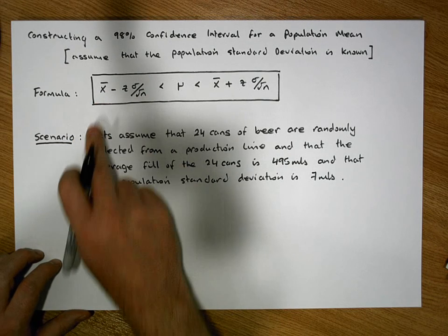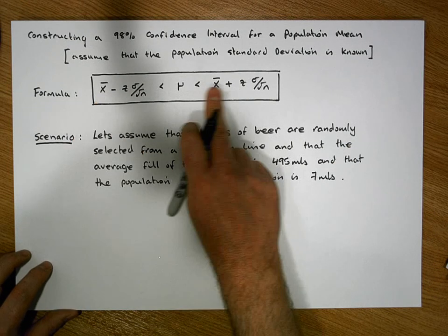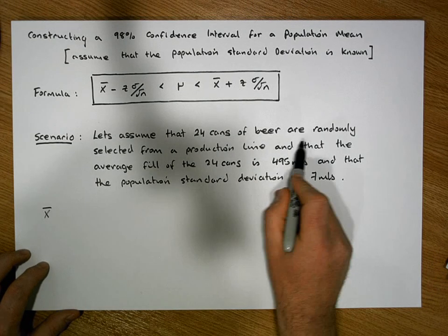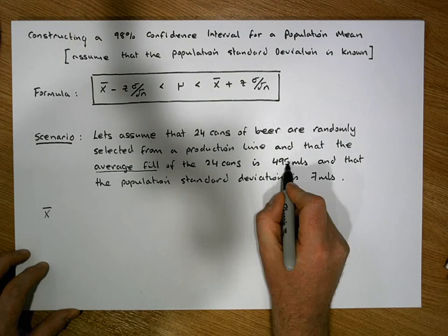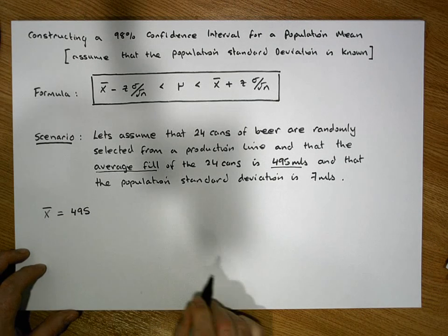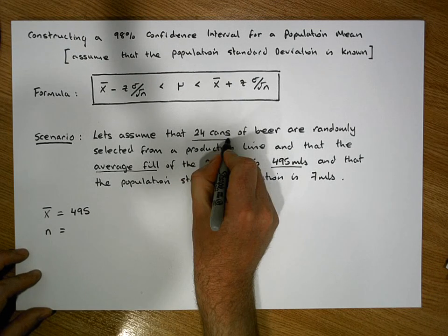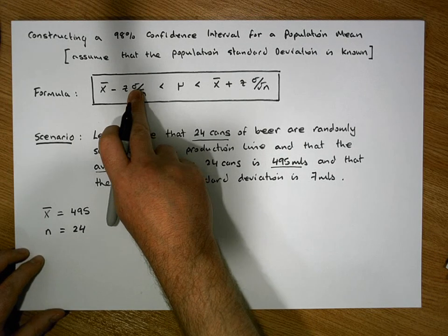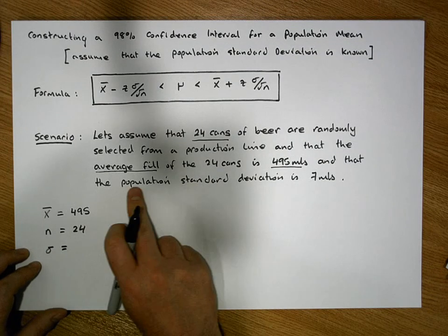There are a number of statistics and parameters we require from our scenario. First, we need the sample mean x-bar. From our scenario, 24 cans of beer were randomly selected and the average fill is 495 mils, so x-bar equals 495. We also need the sample size n — from the scenario, 24 cans were selected, so n equals 24.